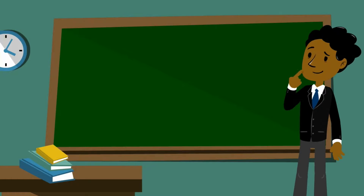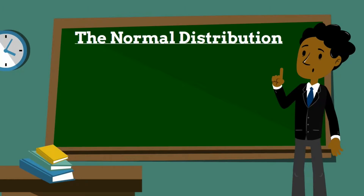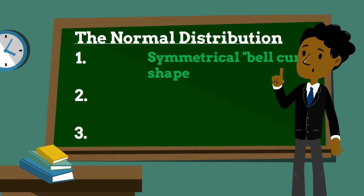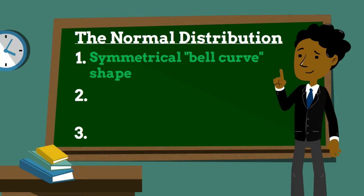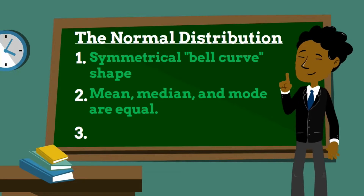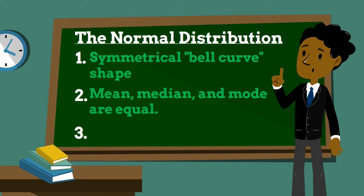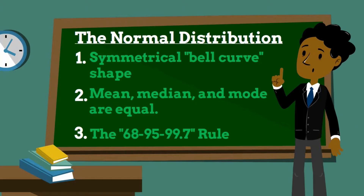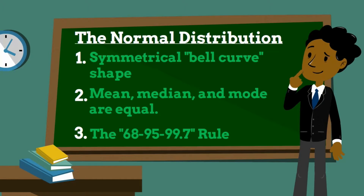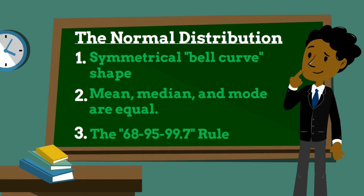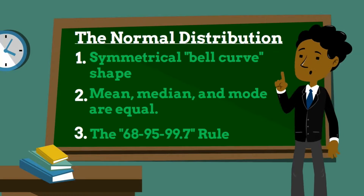This problem centers around what is called a normal distribution, which is a common way data is organized. It has three main facts. Number one, it has a symmetrical bell curve shape. Number two, the mean, median, and mode are the same in a normally distributed data set. And number three, the 68-95-99.7 rule states that 68.27% of the data falls within one standard deviation of the mean, 95.45% falls within two standard deviations, and 99.73% falls within three standard deviations of the mean.